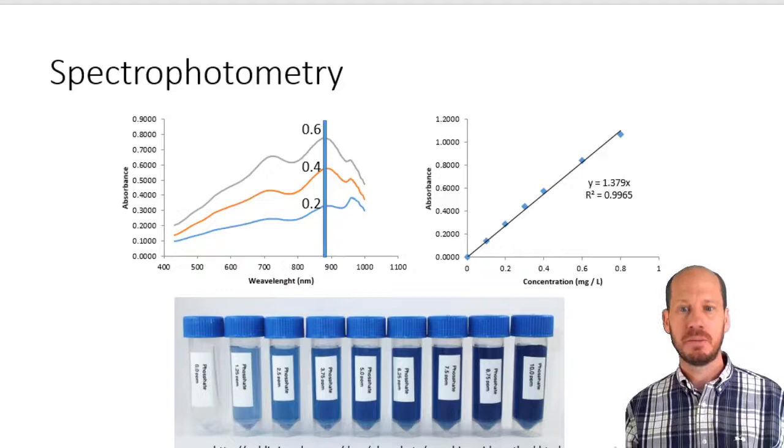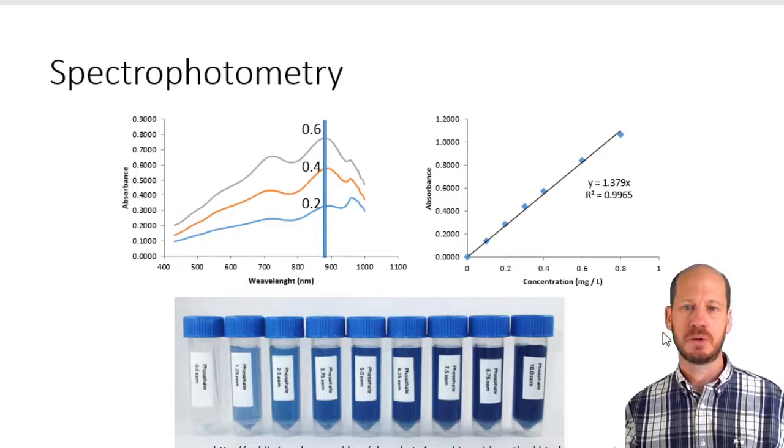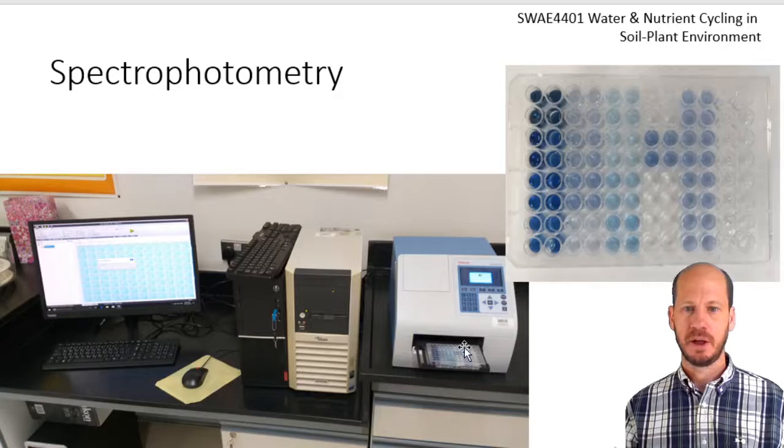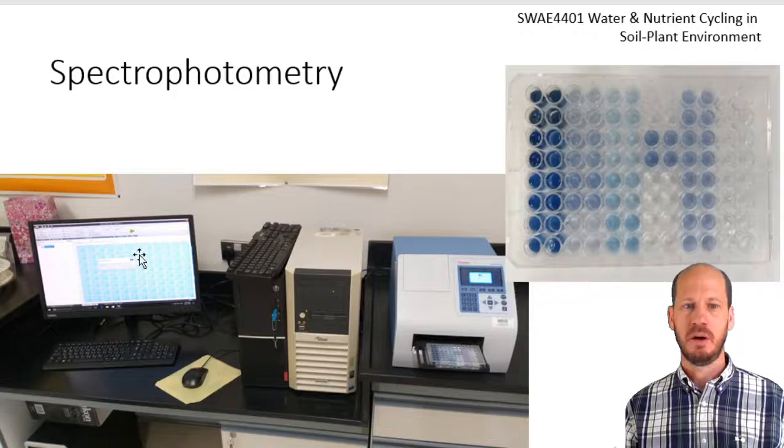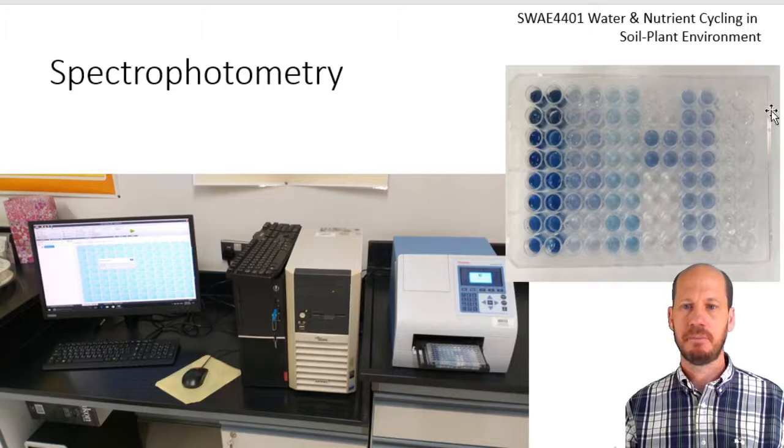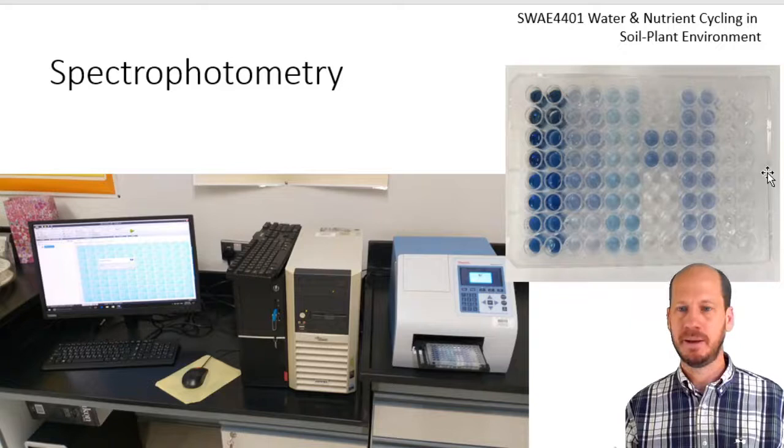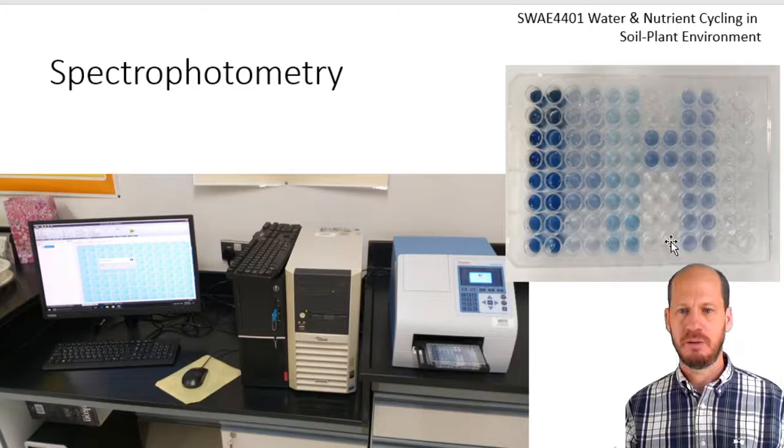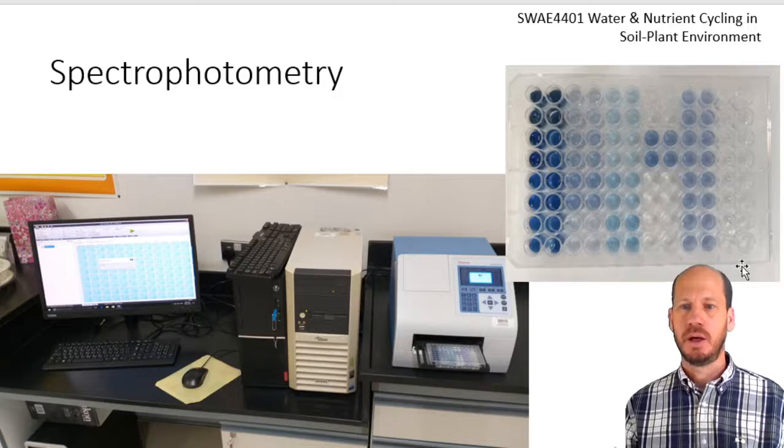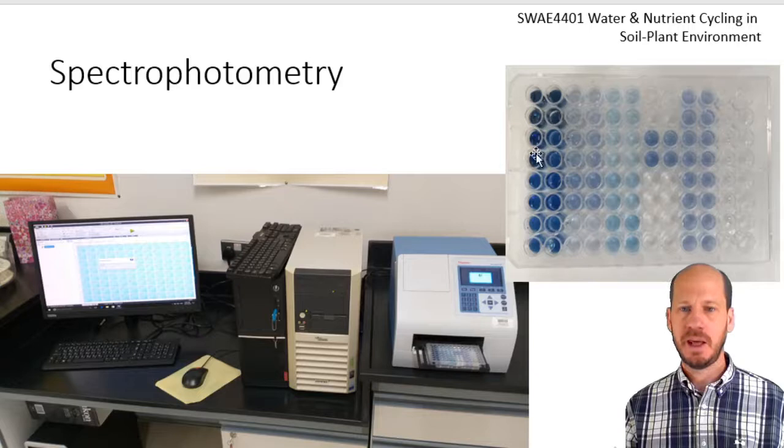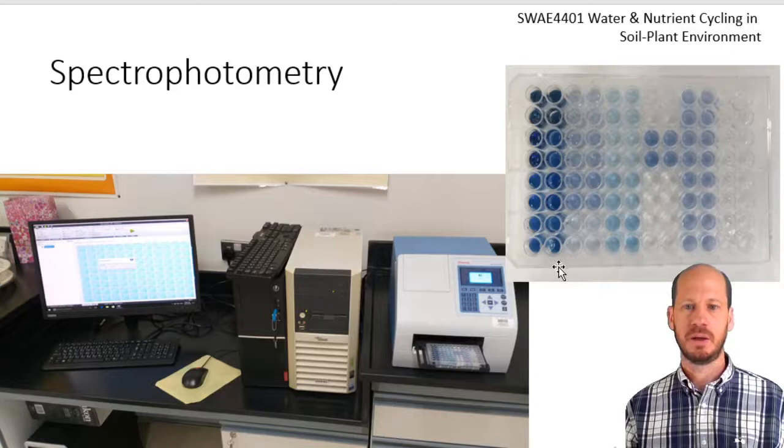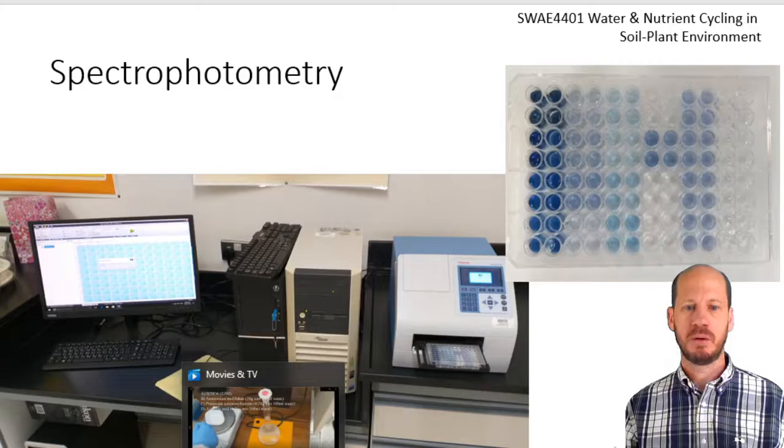Let me show you the equipment. We have on the right the plate reader, on the left the computer that controls the plate reader, and here is the microplate. The microplate is just a transparent plastic tool that has very little absorbance of light. We can place 300 microliters maximum in each well. It has 96 wells in total: 8 rows and 12 columns.